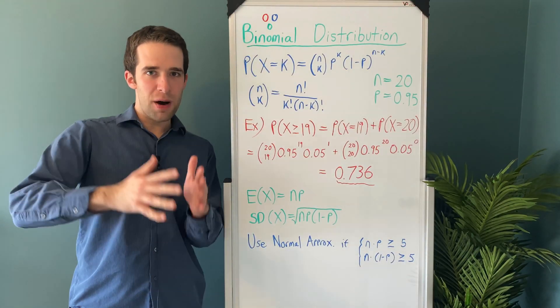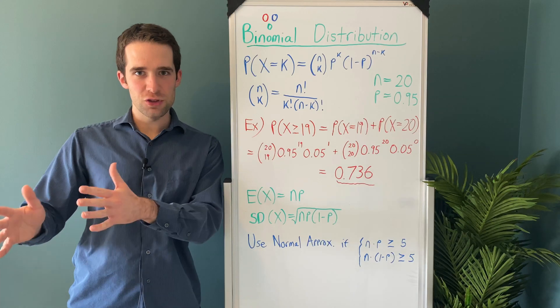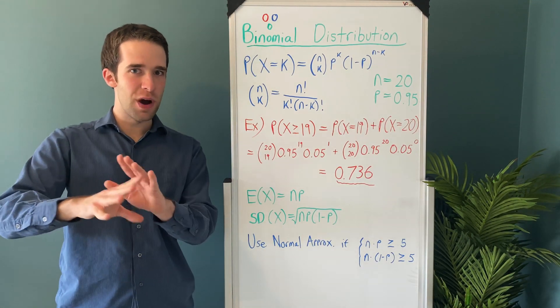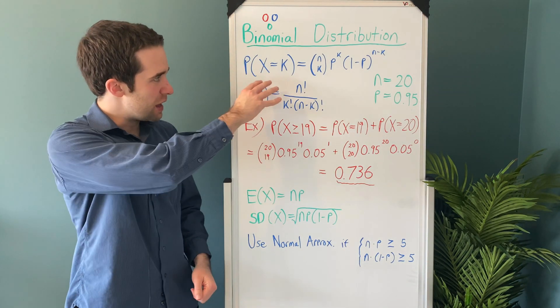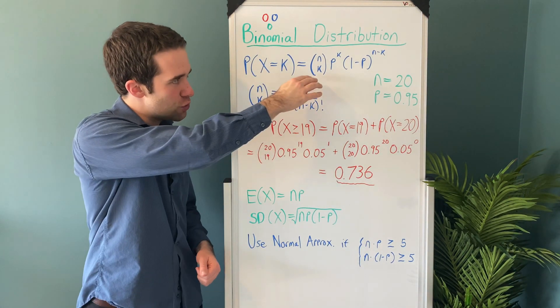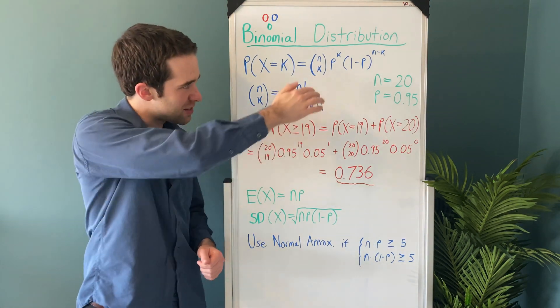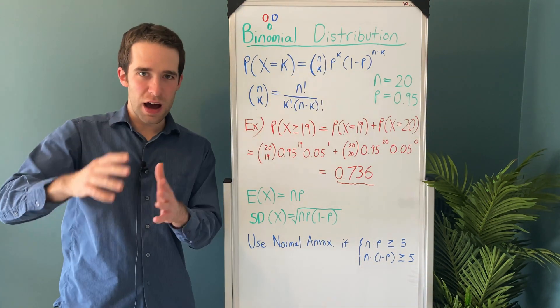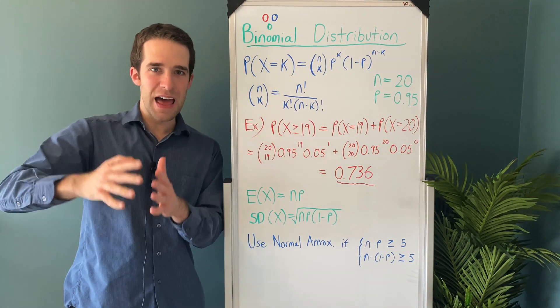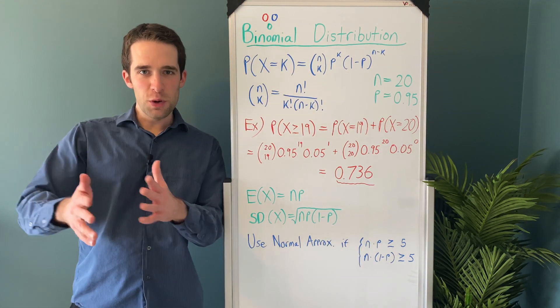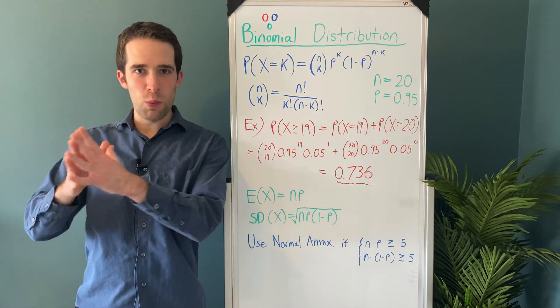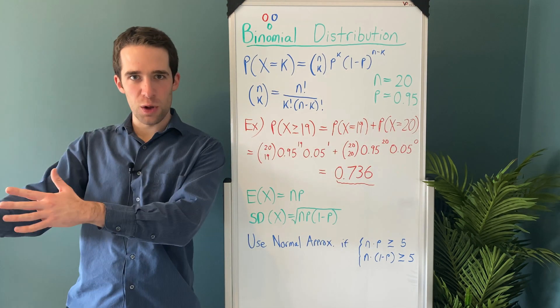All right, now let's look at the formula for our binomial probability calculation. So the probability that you have k successes given you have n trials is this weird looking thing over here. It's equal to n choose k times the probability of success to the power k times the failure rate 1 minus p to the power n minus k. For those of you unfamiliar with the choose function, it's basically the number of ways that you can choose something from something else.